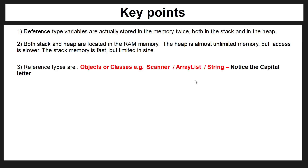Reference types are all kinds of objects or classes that you use — for example, the Scanner, any kind of array or ArrayList, and strings are also reference types. It's important to notice the capital first letter, whereas primitive data types start with a lowercase letter.